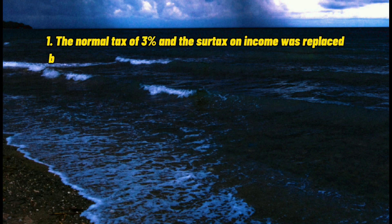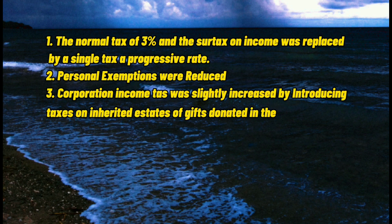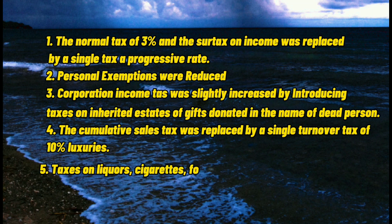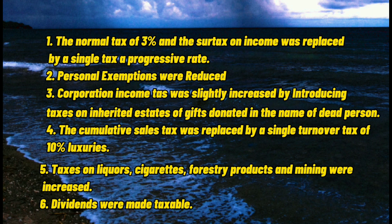In 1939, the Commonwealth government created the National Internal Revenue Code with the following major changes: Number 1, the normal tax of 3% and the surtax on income were replaced by a single tax at a progressive rate; Number 2, personal exemptions were reduced; Number 3, corporation income tax was slightly increased by introducing taxes on inherited estates or gifts donated in the name of deceased persons; Number 4, the cumulative sales tax was replaced by a single turnover tax of 10% on luxuries; Number 5, taxes on liquors, cigarettes, forestry products, and mining were increased; and Number 6, dividends were made taxable.